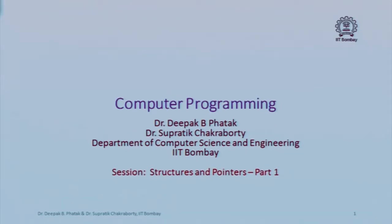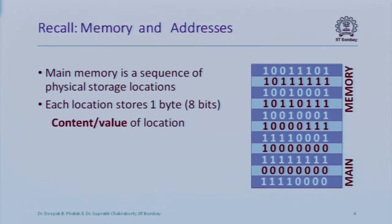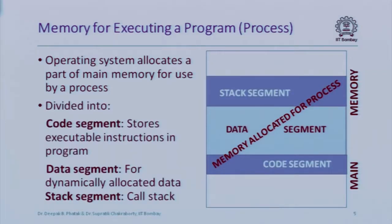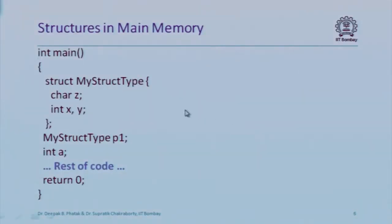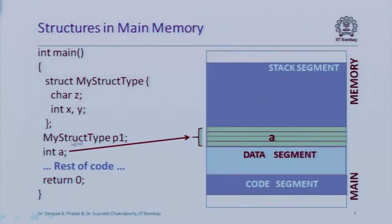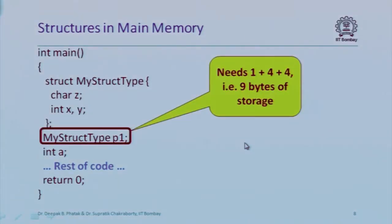This topic is about structures and pointers. Every memory location has an address and stores one byte. Every program that runs is allocated a chunk of memory divided into stack segment, data segment, and code segment. Here I have a simple program with a structure type 'my_struct' which has a character member and two integer members. I've declared two local variables: p1 of type my_struct and a as integer. Since both are local variables, space is allocated in the stack segment in the activation record of main.